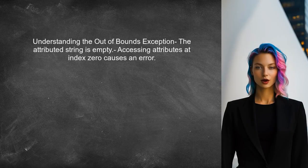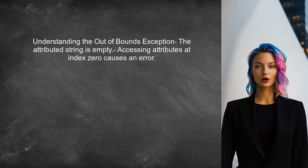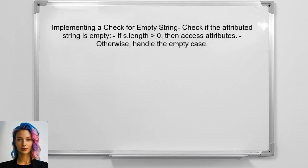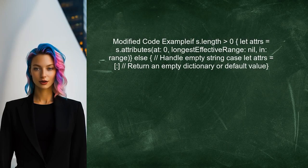To address the out-of-bounds exception, first understand that the exception occurs because the AttributedString is empty. When trying to access attributes at index zero, it results in an error since there are no characters in the string. Next, implement a check to ensure the AttributedString is not empty before attempting to access its attributes. This can be done by checking the length of the string. If the string is empty, return a default value or handle the situation gracefully.